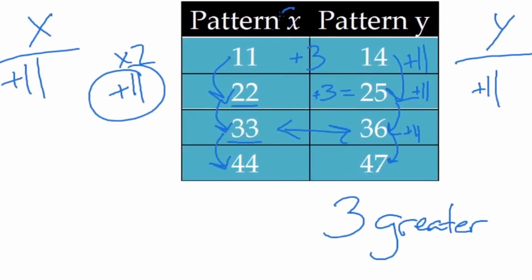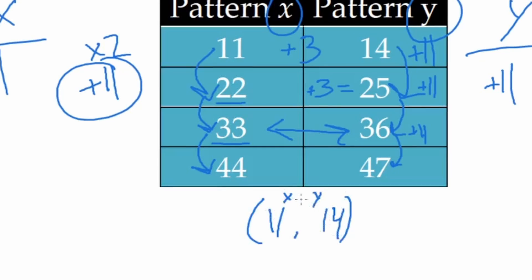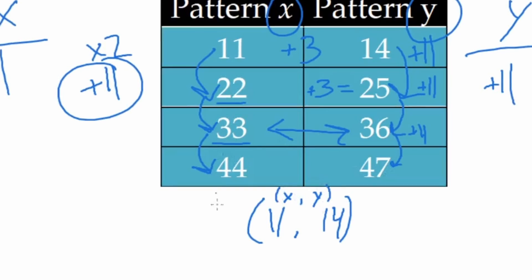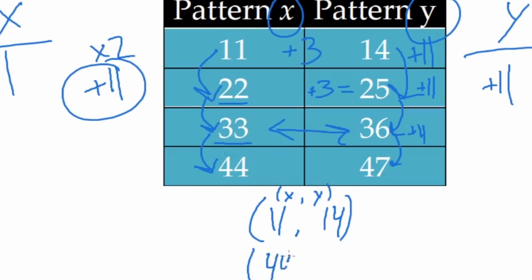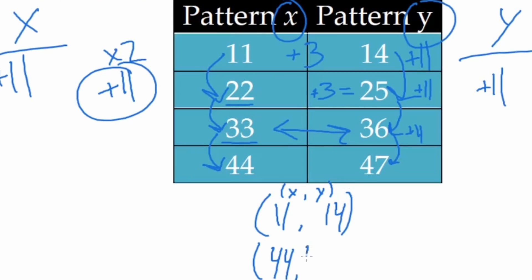As we look back at this table right here, we have X values and Y values. So we could write any of these as an ordered pair. So let's go ahead and do that. We take terms from the same level that correspond to each other. We've got an 11 and a 14. Let's do one more right here. If we have X equals 44, then Y is going to equal 47.